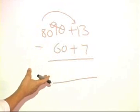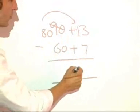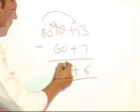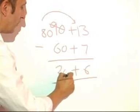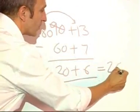We have a slightly more transparent question now of 13 subtract 7 is 6, and 80 subtract 60 is 20, and combine these two differences will give us the answer of 26.